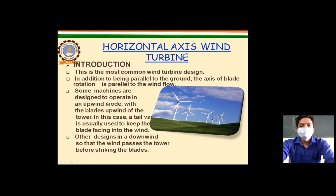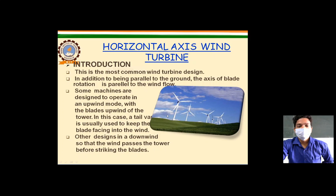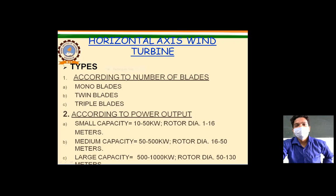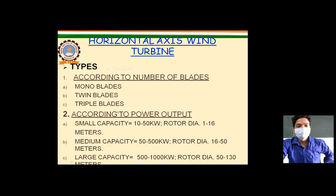Some machines are designed to work in the upwind mode with the blades upwind of the tower, while other designs are downwind. The horizontal axis wind turbine may also be classified by number of blades: mono blade, twin blades, or triple blades. The maximum number of blades used is three.